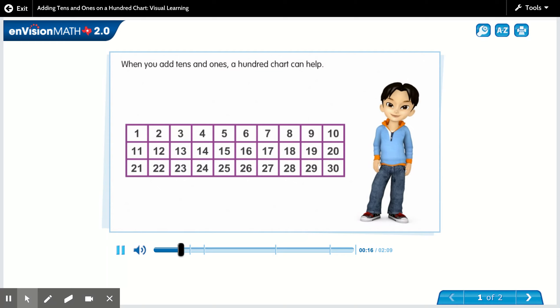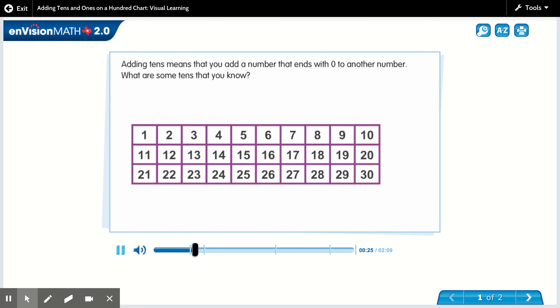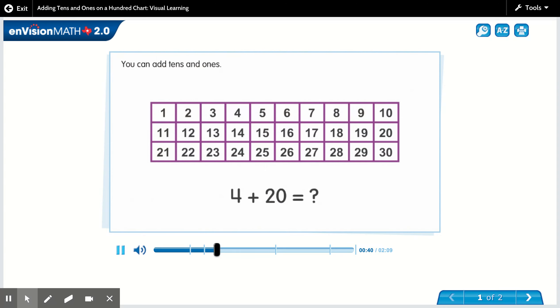When you add tens and ones, a hundred chart can help. What does it mean to add tens? Adding tens means that you add a number that ends with zero to another number. What are some tens that you know? Some tens are 10, 20, and 30.